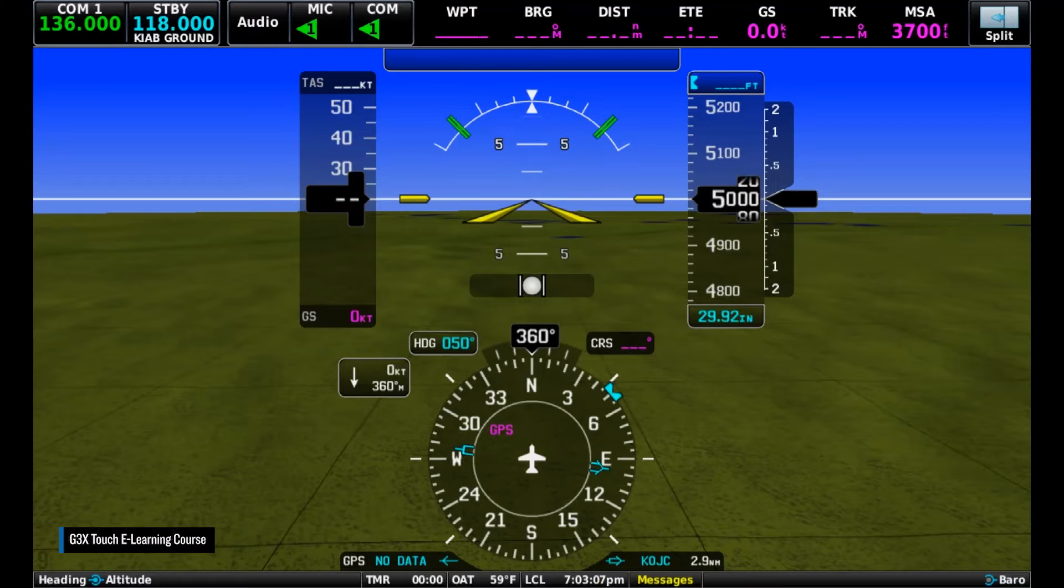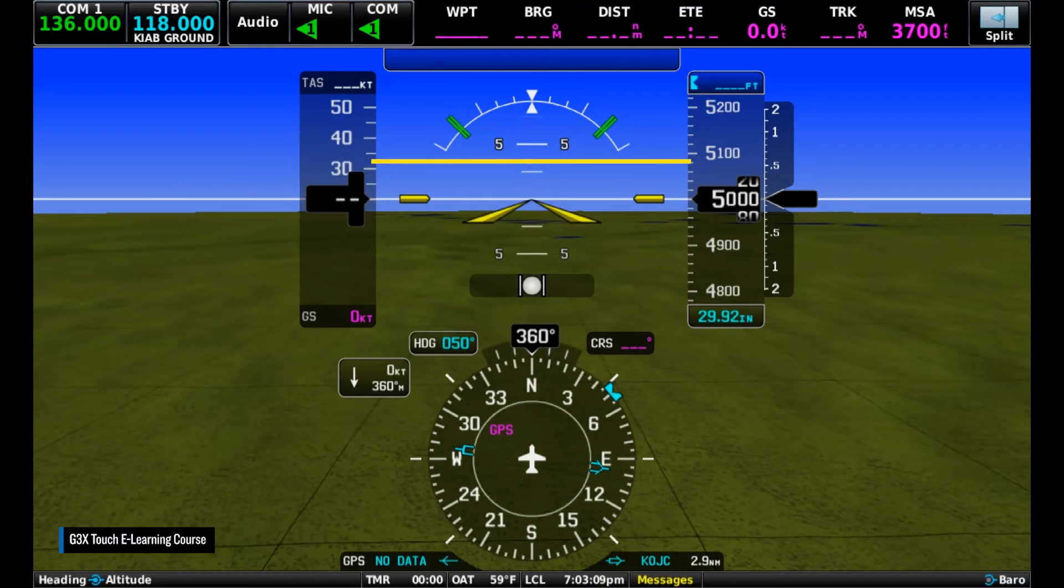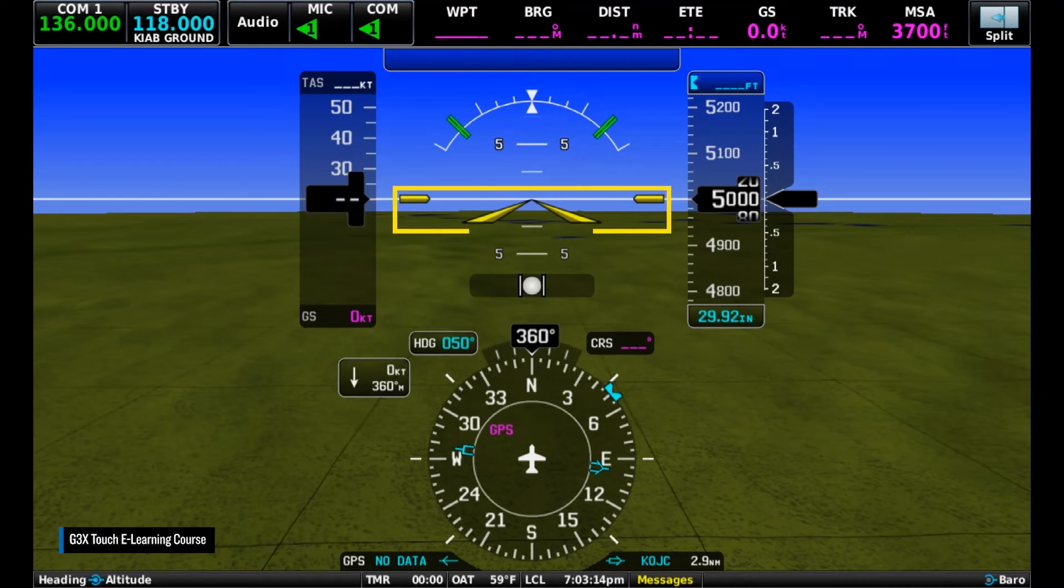The standard round dial attitude indicator is replaced by a full display virtual representation of the ground and sky. The airplane symbol is fixed in the center of the display. The pitch scale can be seen behind the airplane symbol.